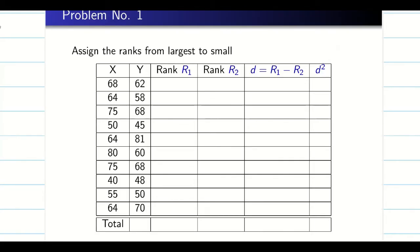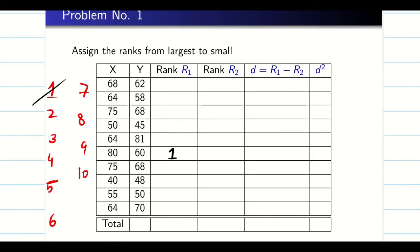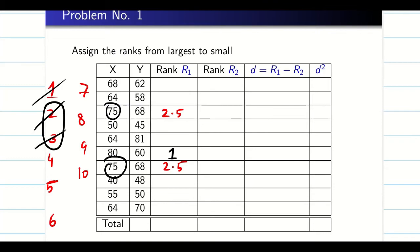To avoid errors, first count how many values there are — we have 10 values. Write them out before assigning ranks. In X series, 80 is the highest value, so assign rank 1 to 80 and cancel it. The next highest value is 75, but 75 is repeated twice, so we take ranks 2 and 3, average them to get 2.5, and allocate rank 2.5 to both occurrences. Ranks 2 and 3 are now exhausted.